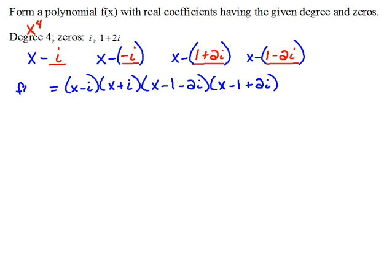This is our polynomial function. The only problem here is that this is in factored form, and it didn't tell us to leave it in factored form. It just said find the polynomial. So we're going to have to go ahead and multiply all this out.